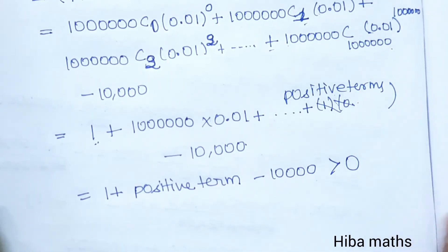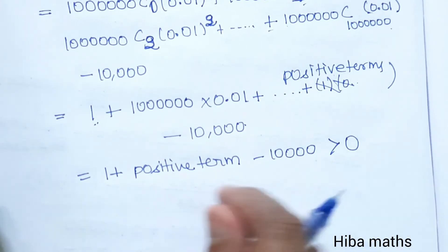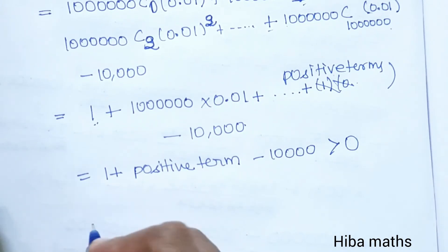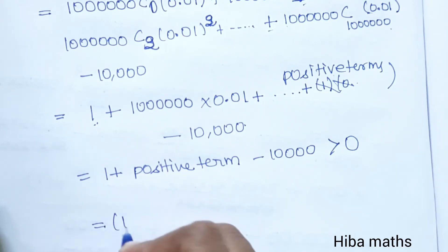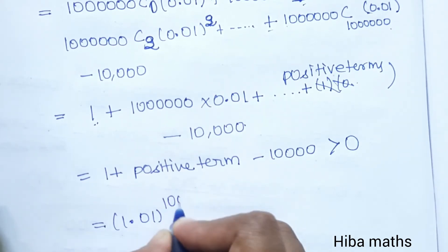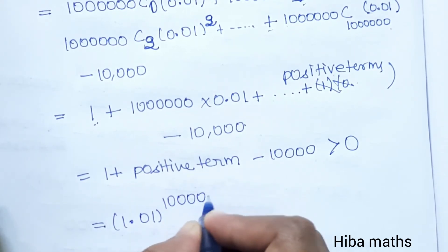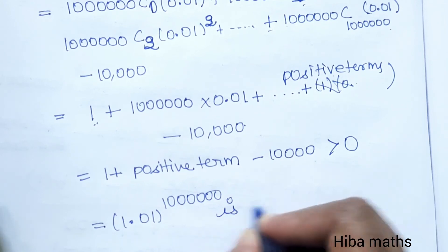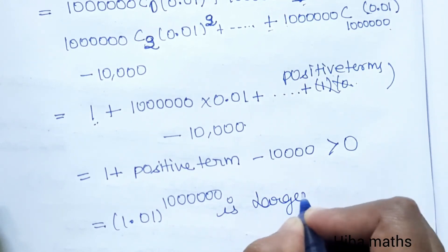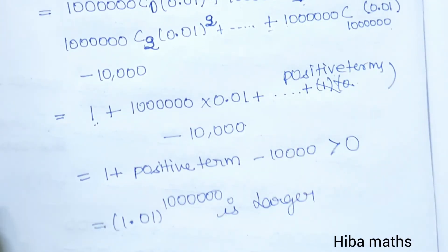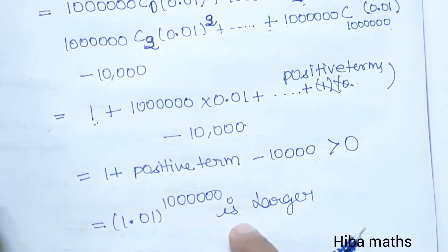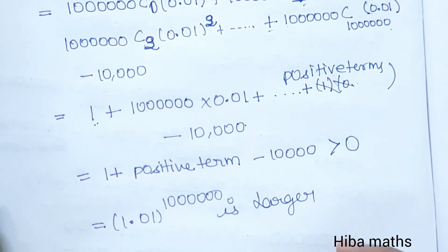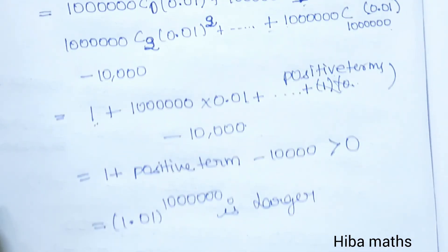Which means, adding the first term, 1.01 power 1000000 — that is a very large number. So 1.01 power 1000000 is larger. I hope you understand. Thank you so much for watching.